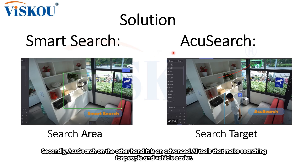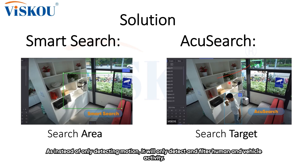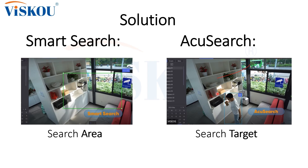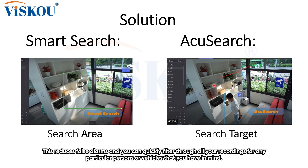AccuSearch, on the other hand, is a powerful advanced AI-powered tool in network recorders that makes searching for people and vehicles easier. Instead of only detecting motion, it will detect and filter human and vehicle activity. This reduces false alarms and you can quickly filter through all of your recordings for any particular persons or vehicles that you have in mind.